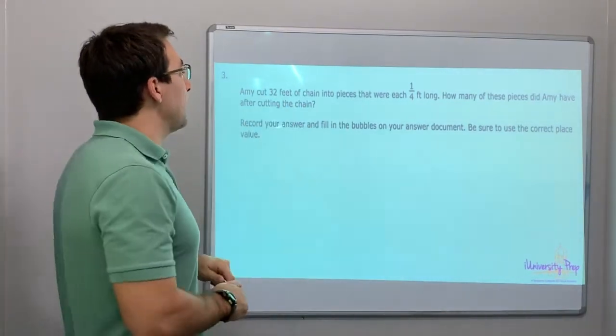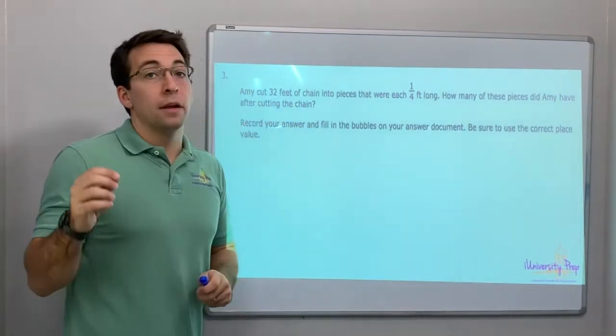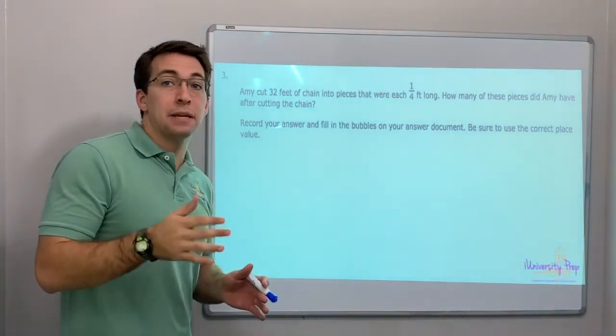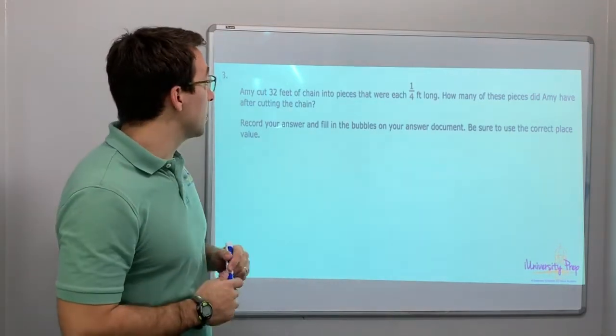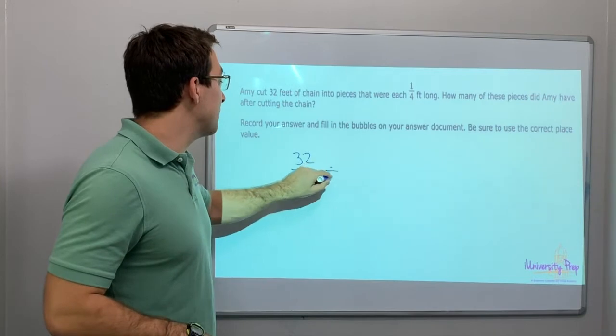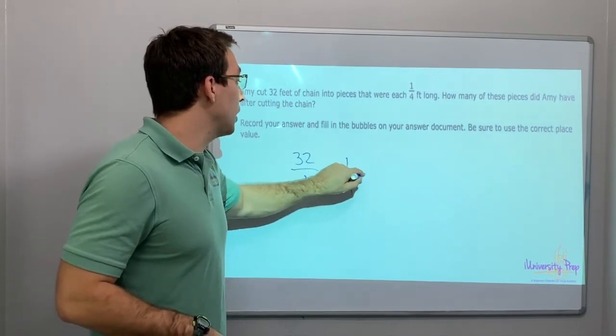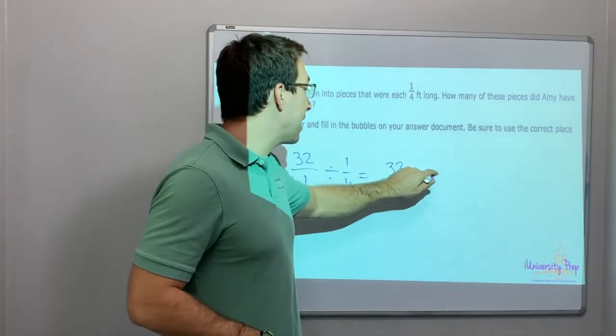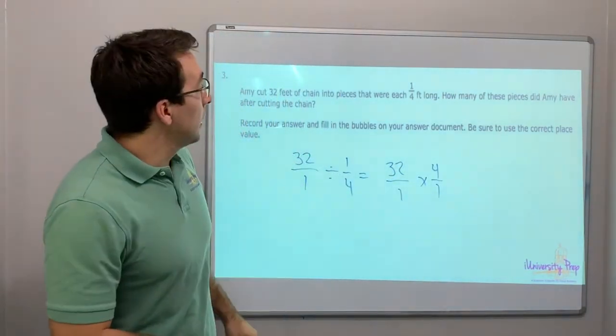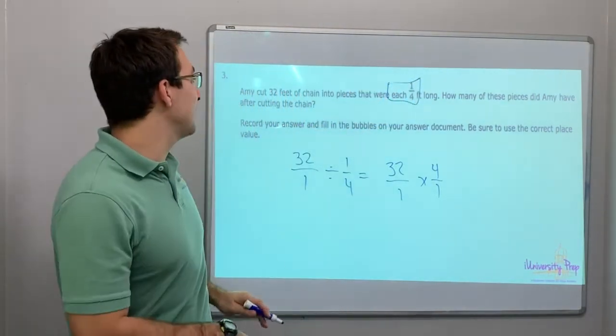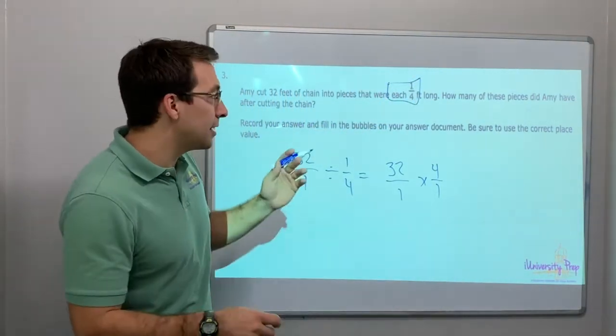Make sure you're using the context clue of the question to help you. Amy cut 32 feet of chain into pieces that were one quarter foot long. How many of these pieces did Amy have after cutting the chain? Each. How many of these pieces? Right? So that helps you.